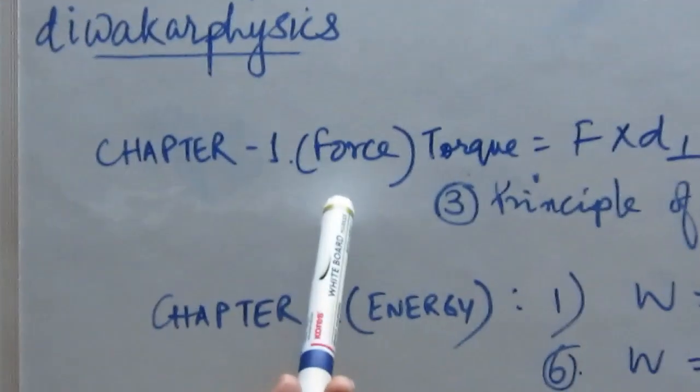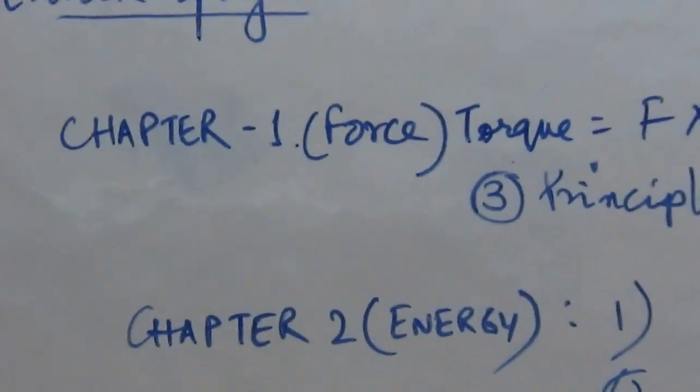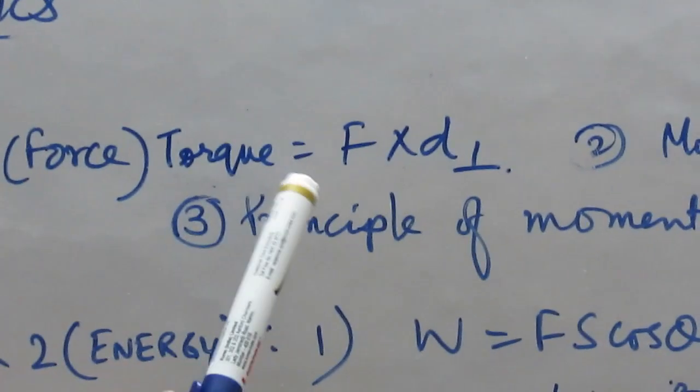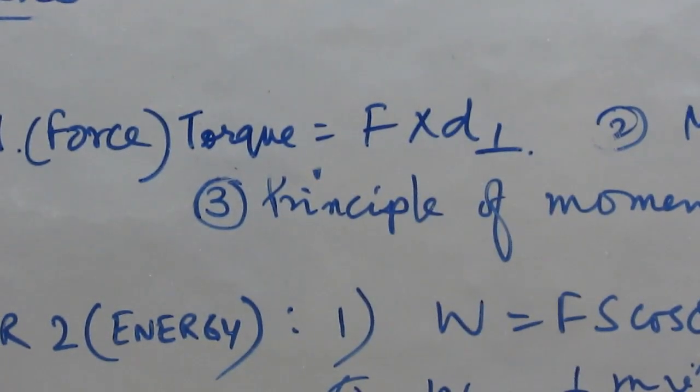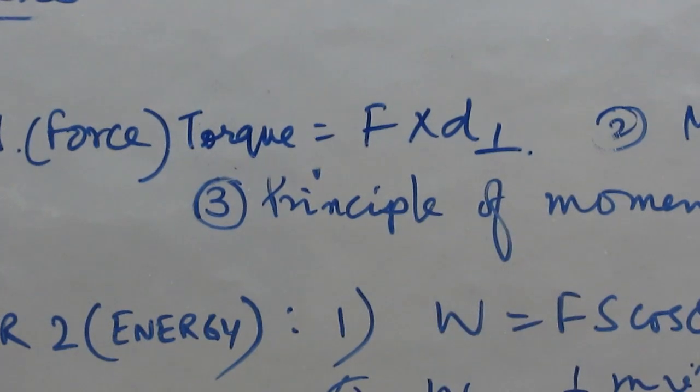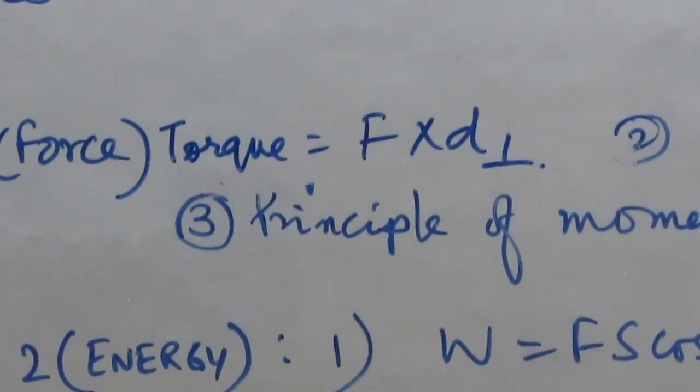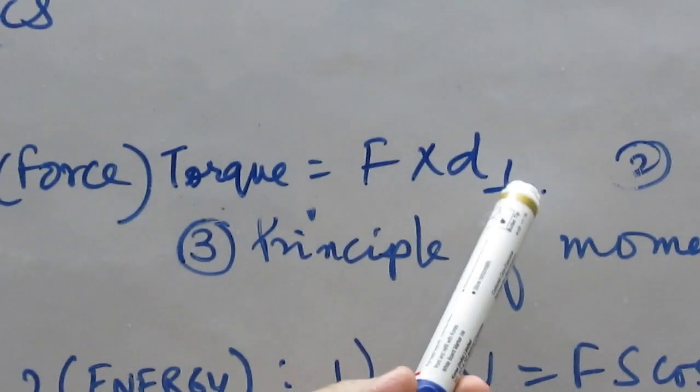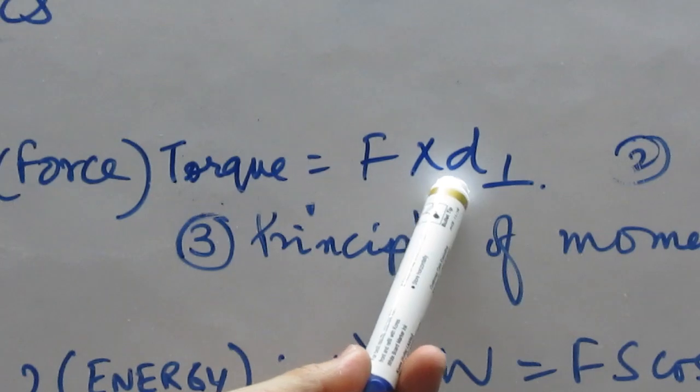Chapter 1, in the fourth chapter there is an important formula: moment of force or torque. This formula is force into perpendicular distance. You know the force. What is the perpendicular distance? The axis of rotation, how much distance is it?